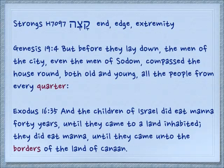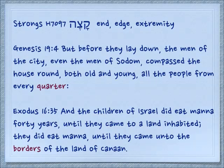There is also a noun form, katsa. Genesis 19:4 — But before they lay down, the men of the city, even the men of Sodom, compassed the house, both old and young, all the people from every quarter, from every region — it's the end of a complete thing. Exodus 16:35 — And the children of Israel did eat manna 40 years until they came to a land inhabited; they did eat manna until they came unto the borders of the land of Canaan. It was the end, the edge of the land.